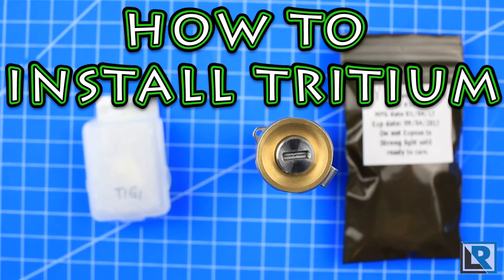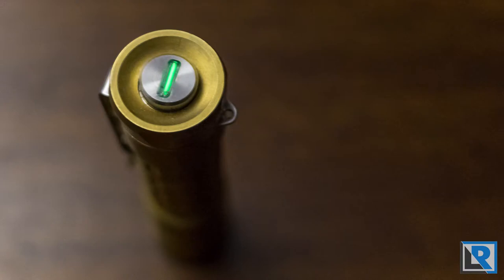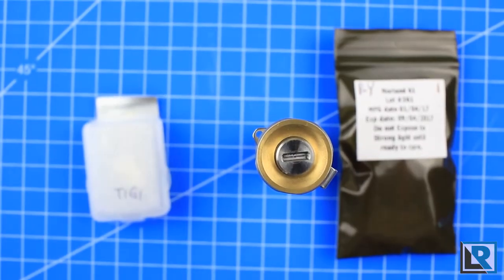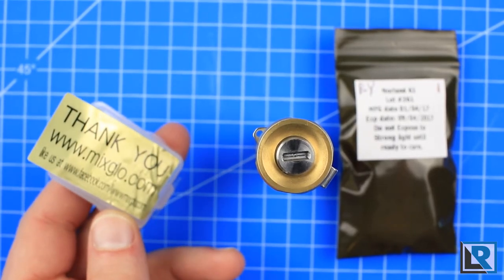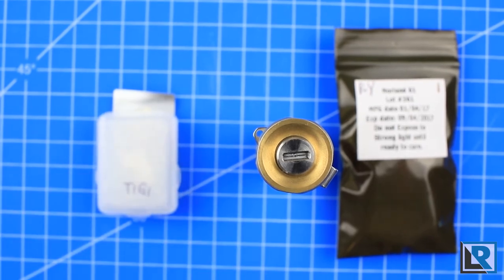I wanted to make a quick video showing you how to install tritium in the Raylight Brass Pineapple. To do this I have Norlin 61 which is a UV reactive adhesive and then I have tritium that I bought from mixglow.com. This comes from overseas but I was surprised at how quick it came.